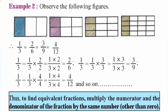Next, multiply by 3: 1 times 3 is 3, and 3 times 3 is 9. Thus, to find equivalent fractions, multiply the numerator and the denominator of the fraction by the same number. The numerator and denominator are multiplied by the same number.